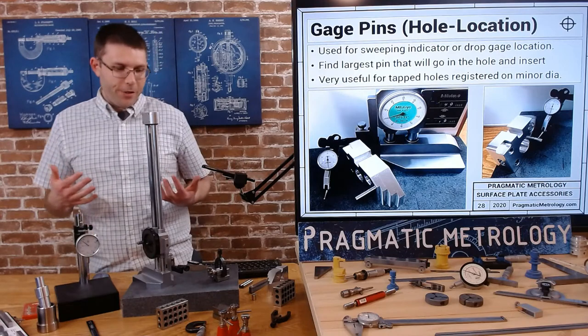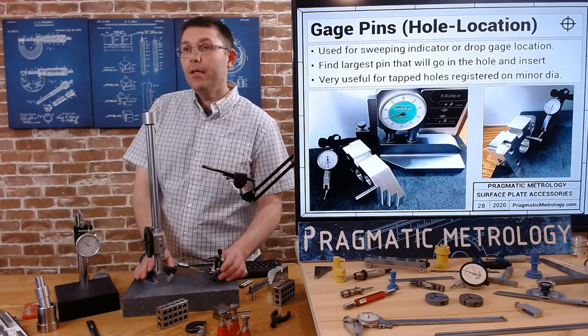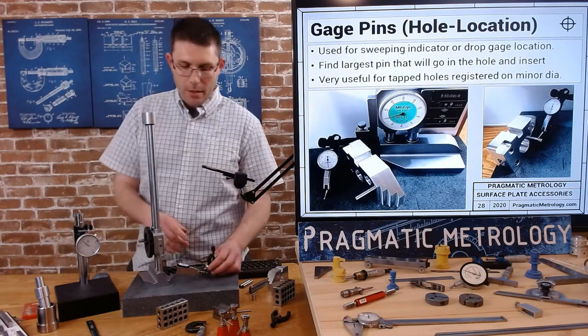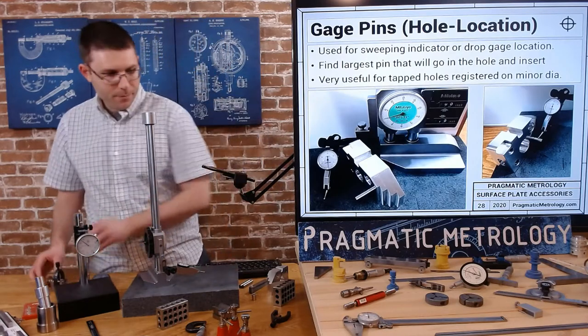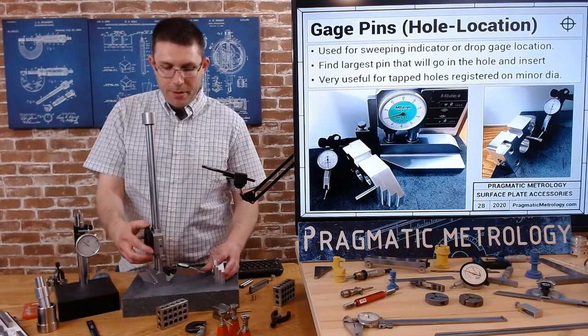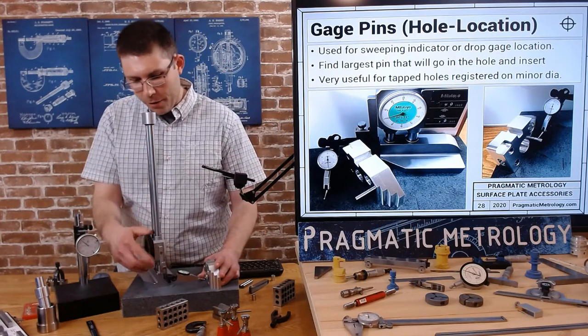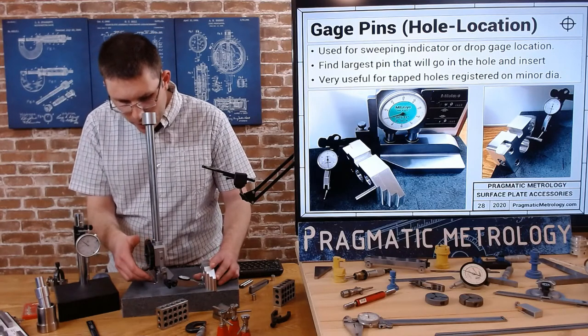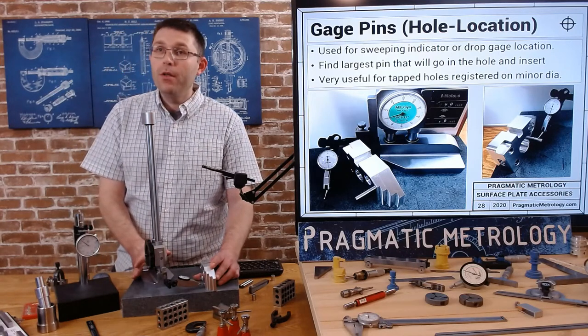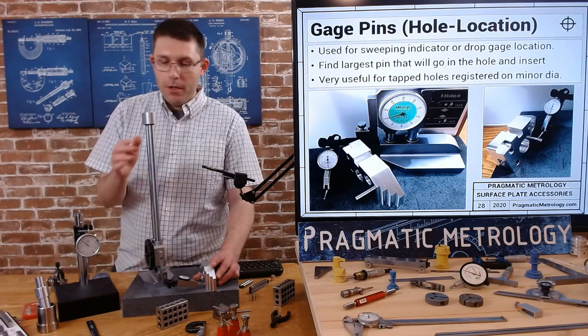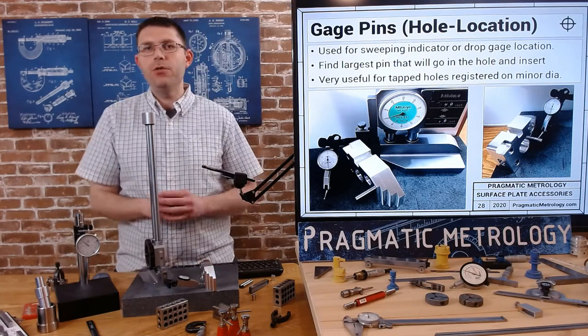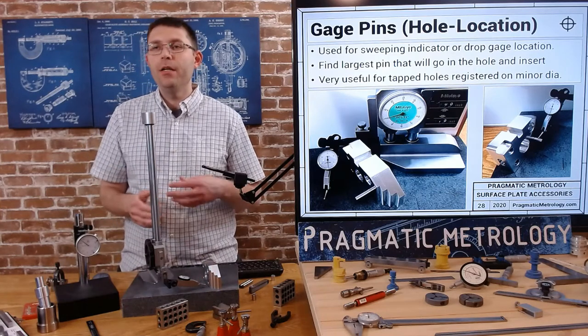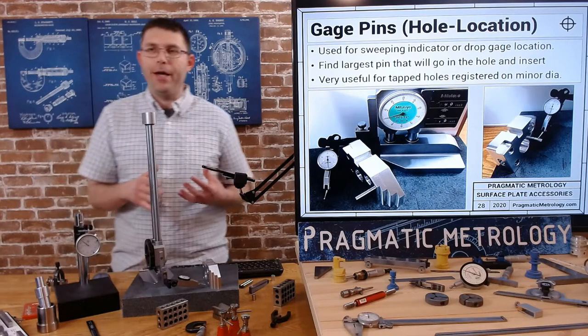Now to do a hole location, we could not use the pin and we could try to get our indicator inside of a hole. And sweep the bottom of the hole and find the bottom of the hole. Use our height gauge travel, just like we do with anytime we use the height gauge. But I'm going to show you both ways. I'm going to show you with a pin and without a pin. So let me show you without a pin first.